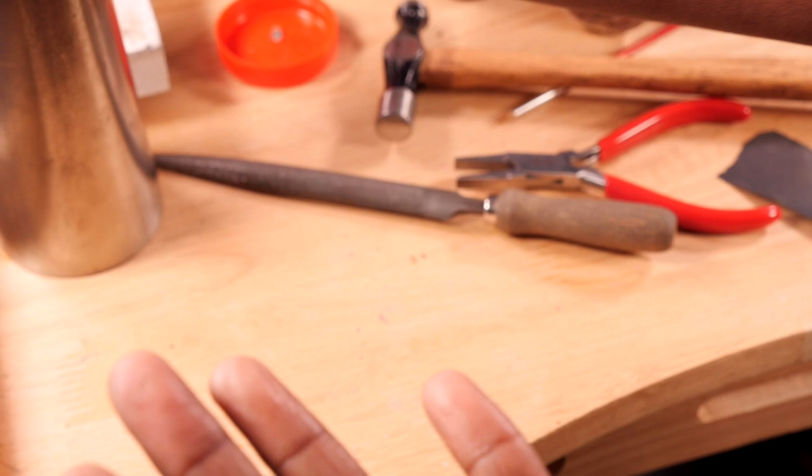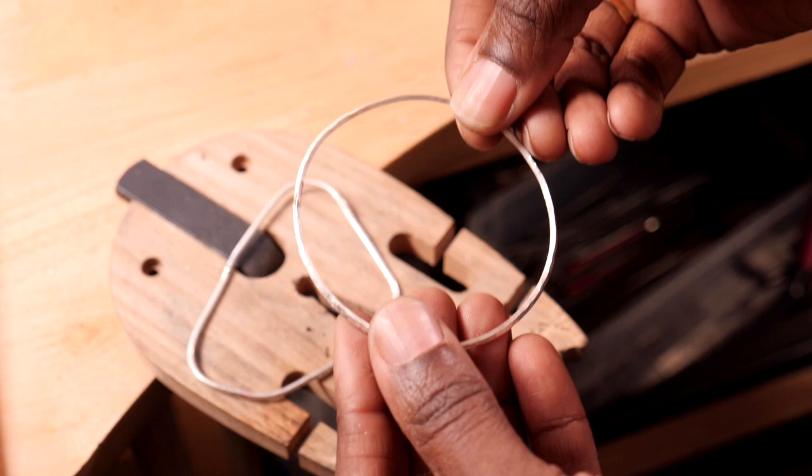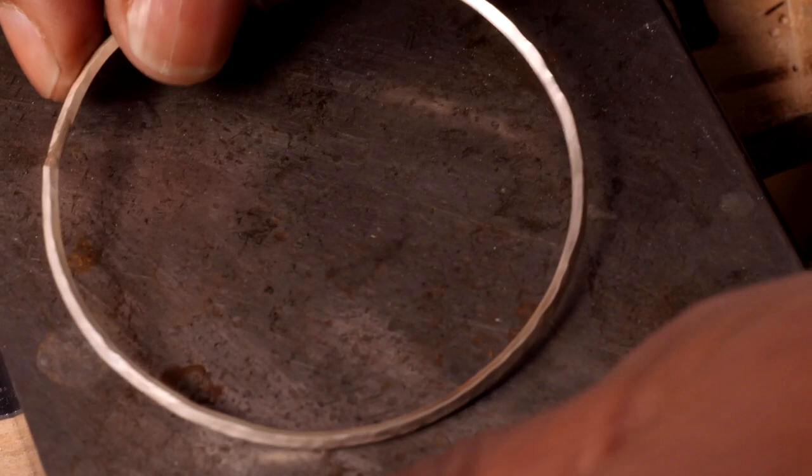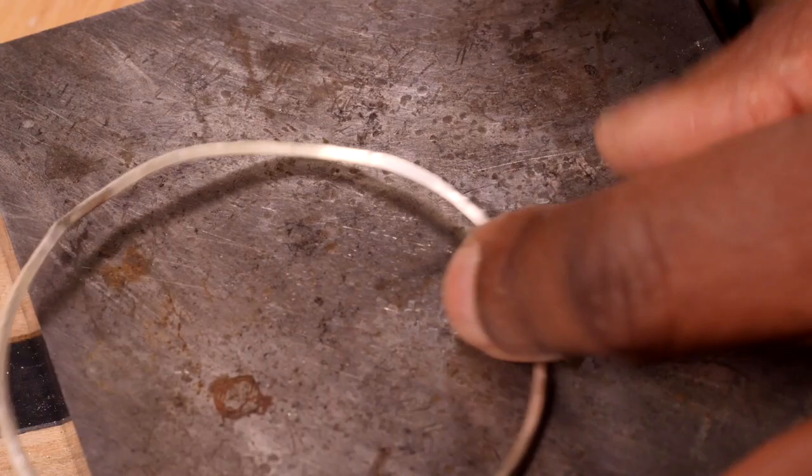Next stage for my square one, just to make sure it's nice and flat. So I'm going to get my steel block again and then hammer. So I lay it on my steel block. I can see that it's not flat, so I just need to make sure it's nice and flat and round.